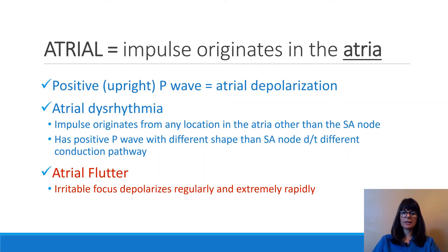Whenever we are discussing atrial rhythms, it means that the impulse originates in the atria. The P wave represents atrial depolarization and contraction. When we have an atrial dysrhythmia, that means the impulse originates from any location in the atria other than the normal SA node, so the conduction pathway will be initiated by an irritable or excitable focus or cell in the atria.